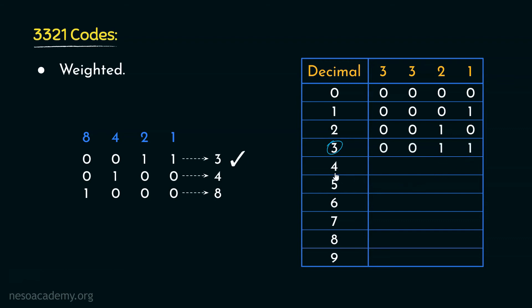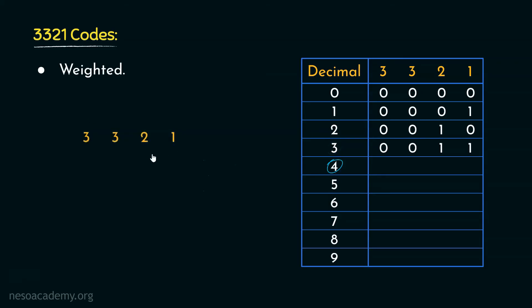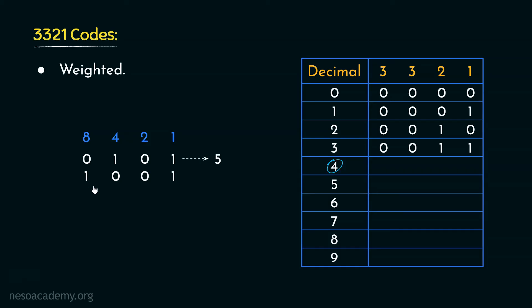A similar case occurs for the encoding of symbol 4 in 3321, because there are 2 different patterns for 4. The pattern 0101 has 1s placed underneath 3 and 1, so this equals 4. Similarly, the pattern 1001 also has 1s placed underneath 3 and 1, giving the value 4. We again take help from 8421: the pattern 0101 in 8421 is the value 5, and the pattern 1001 in 8421 has 1s under 8 and 1, giving the value 9. We select the pattern with the lesser 8421 value, which is 5, so for symbol 4 in 3321, the pattern is 0101.